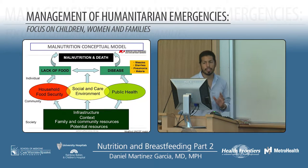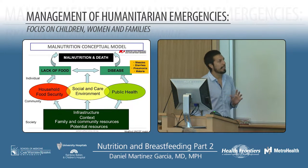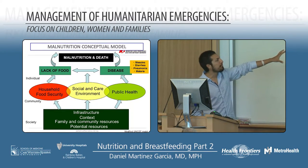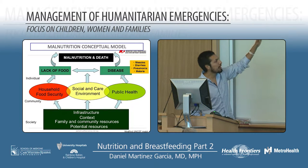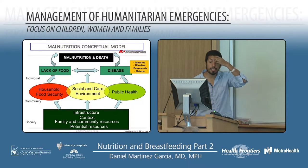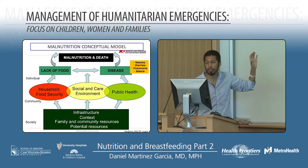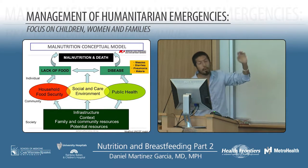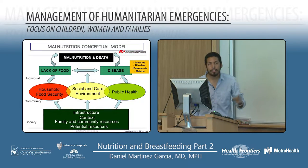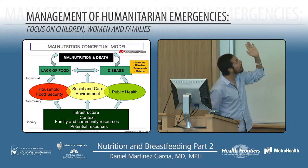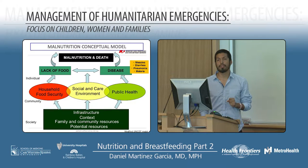The classic conceptual model of malnutrition is always a social problem. Infrastructure, context, resources, potential resources — these feed into three big branches: a problem at the household level of food security in the community, a problem in the care environment, or a problem in the public health system. That creates a loop where there is increasing disease on one side or reduction in food available on the other.